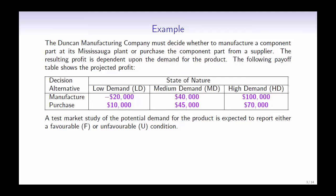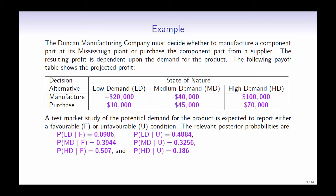A test market study of the potential demand for the product is expected to report either a favorable or unfavorable condition. The relevant posterior probabilities are given below. The probability of a low demand given a favorable condition is 9.86%, and the probability of a low demand given an unfavorable condition is 48.84%. The rest of the probabilities can be seen below. Use a decision tree to recommend a decision strategy.